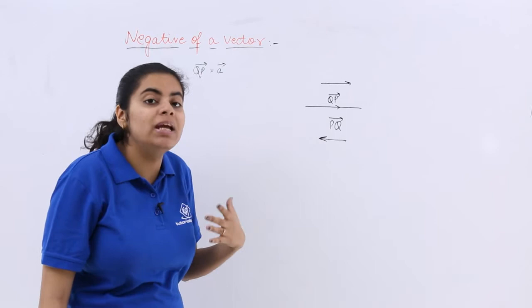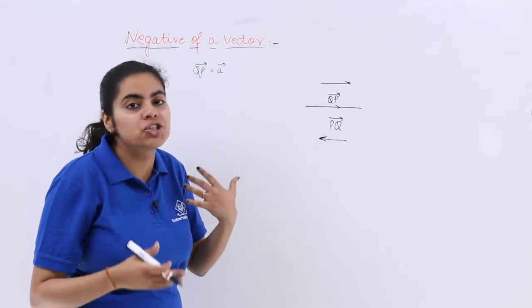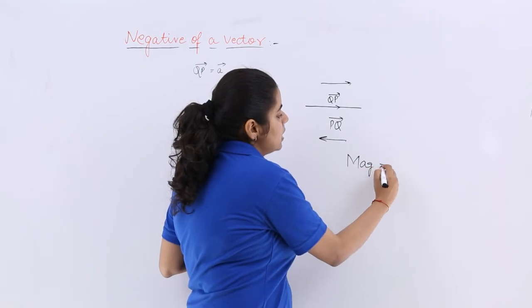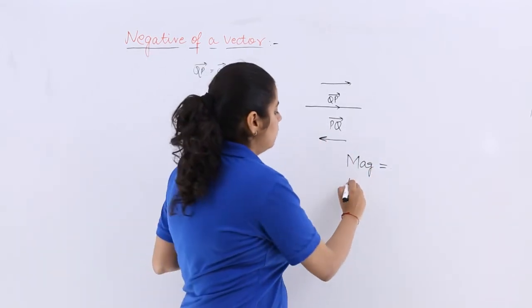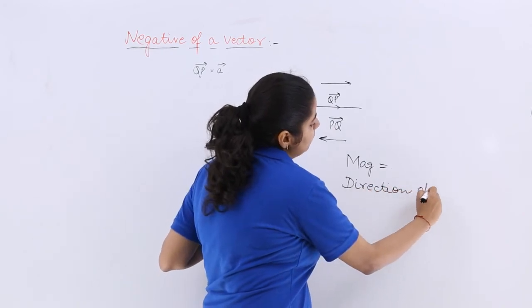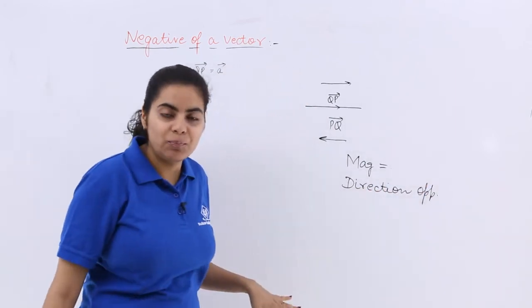The sense of support would be having direction opposite. So the magnitude is equal, magnitude is same but the direction is opposite.